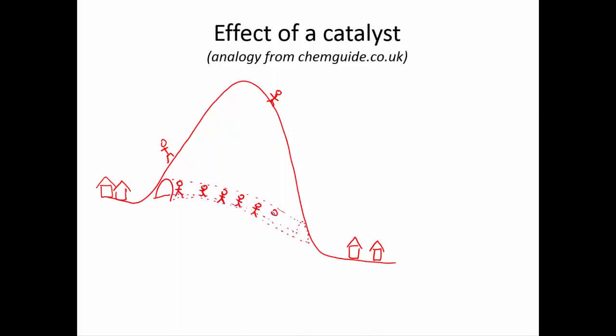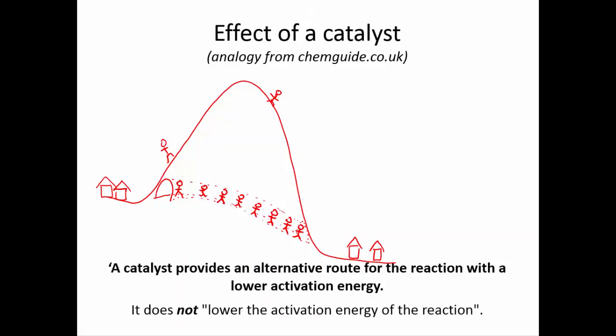Now suppose a tunnel is cut through the mountain. Many more people will now manage to get from one valley to the other by this easier route. You could say that the tunnel route has a lower activation energy than going over the mountain. But you haven't lowered the mountain. The tunnel has provided an alternative route but it hasn't lowered the original one.